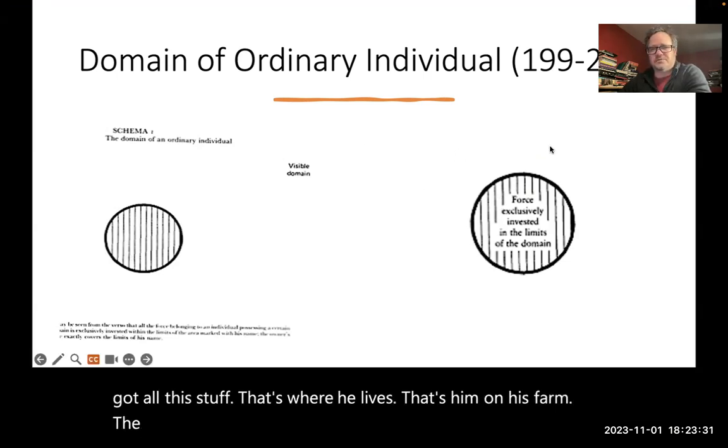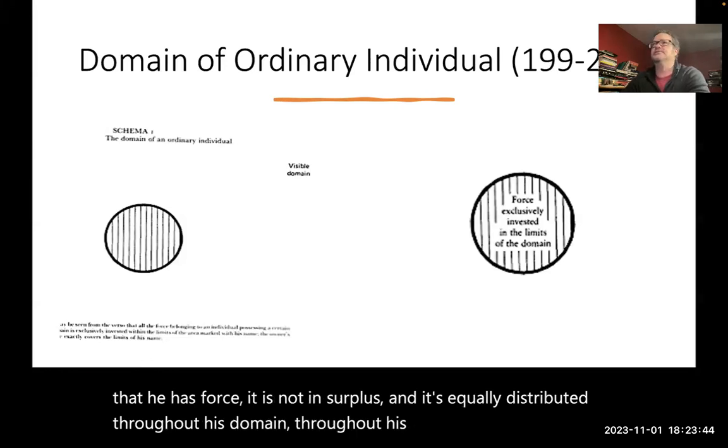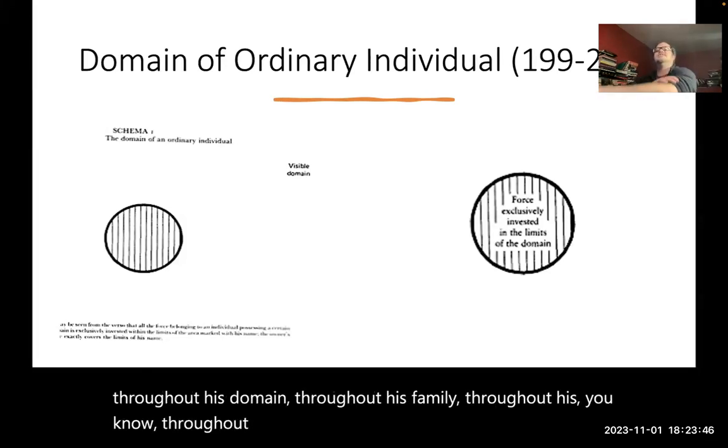The invisible, sort of the magical version of it. What you're seeing is that he has force. It is not in surplus and it's equally distributed throughout his domain, throughout his family, throughout his kithing kingdom, throughout his farm and his family.